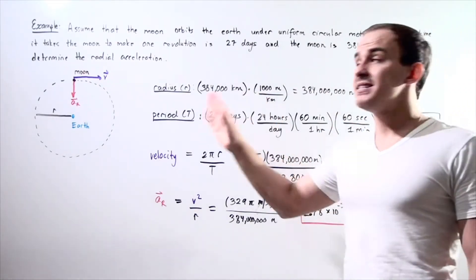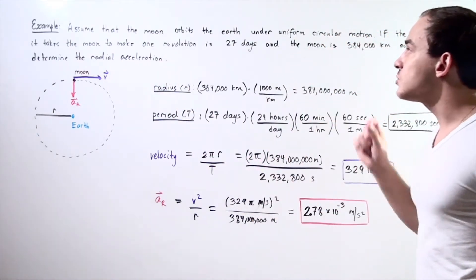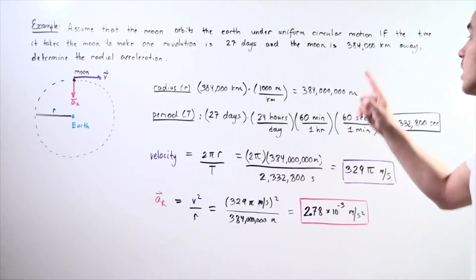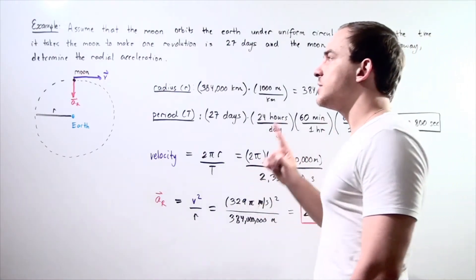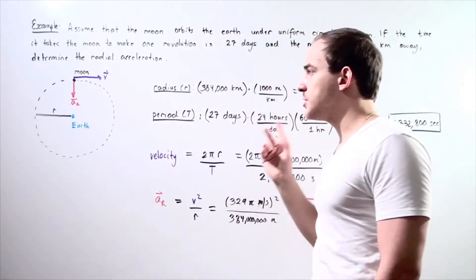Now, if the time it takes the Moon to make one full revolution is about 27 days, and the Moon is 384,000 kilometers away from the Earth, we want to determine what the radial or centripetal acceleration is.